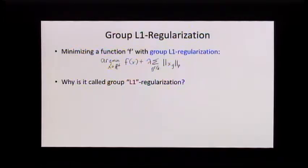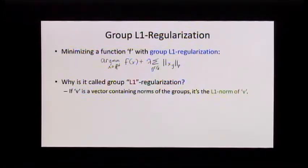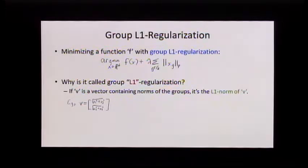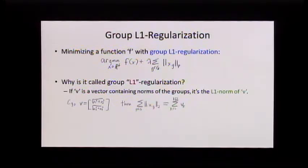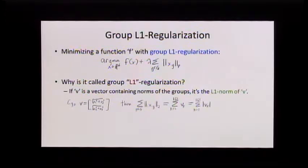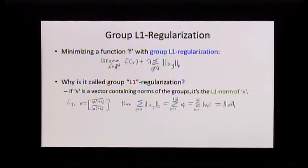So why is it called group L1 regularization? Because it doesn't look like there's an L1 norm in any sensible way. Think of v as a vector containing the norms of the groups. This regularizer is the L1 norm of that vector v. If I have the two groups — the {1,2} group and the {3,4} group — then v is the vector containing the Euclidean norm of (x1, x2) and the Euclidean norm of (x3, x4). The group L1 regularizer is just the sum of the elements of v_k, which equals the L1 norm of v. It's called group L1 because we're doing L1 on the norms of the groups.